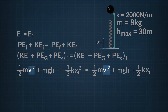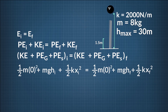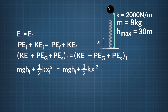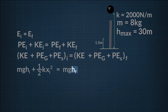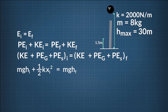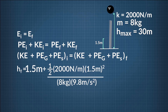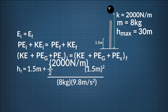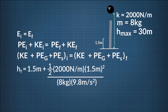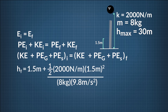We want to solve for H sub f, the maximum height of the bowling ball. So let's rearrange this equation to get H sub f on one side by itself by dividing both sides by M times G. Our initial height is 1.5 meters, added to one-half times the spring constant K of 2,000 newtons per meter times the initial displacement of 1.5 meters squared, divided by our mass of 8 kilograms times the acceleration due to gravity 9.8 meters per second squared. Plugging all these numbers in, we find the maximum height above ground of the bowling ball is 30 meters.